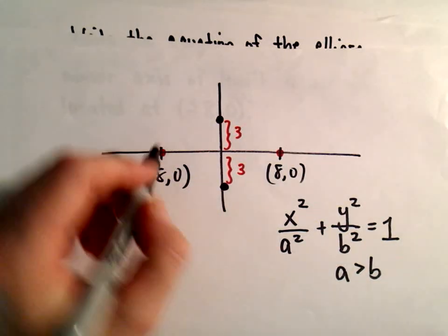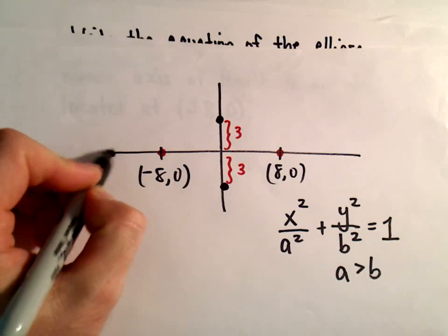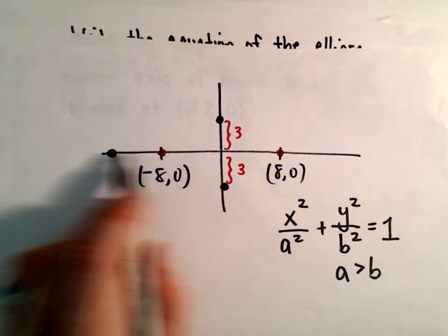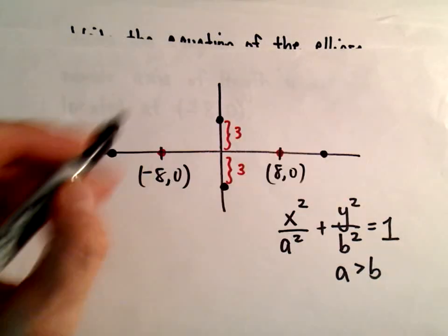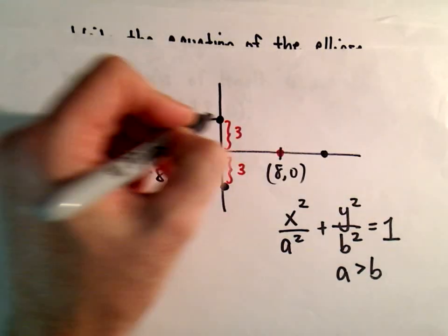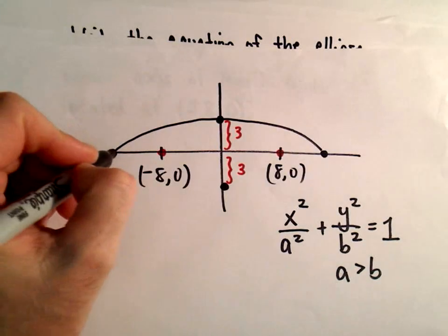So I know that the ellipse goes through those points and since these are the foci, the x-intercepts will be a little bit to the left and a little bit to the right. So there's our ellipse roughly.